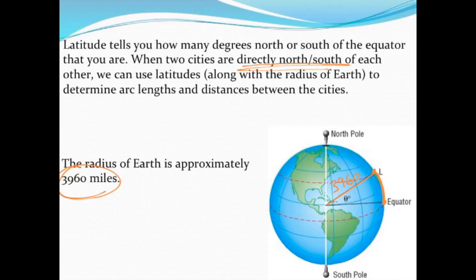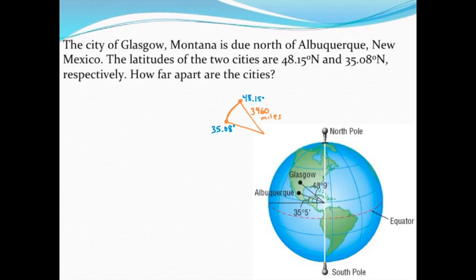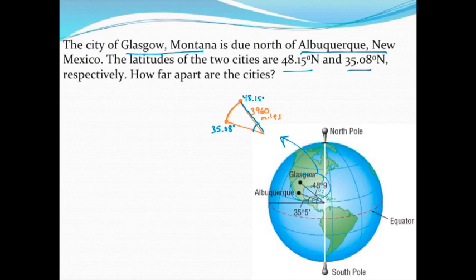So let's take a look at our example. The two cities we're going to look at are Glasgow, Montana, and Albuquerque, New Mexico. We're told that they're directly north and south of each other and we're given the latitudes of the two cities. I've redrawn this part of the picture and I've got the radius already figured out — that's going to be the radius of the earth, approximately 3,960 miles. And what I'll need to do is find the angle between the two cities.